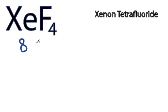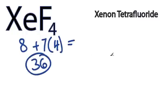Xenon has 8 valence electrons. Fluorine has 7, but we have 4 of the fluorines, so that gives us 8 plus 28, 36 valence electrons.